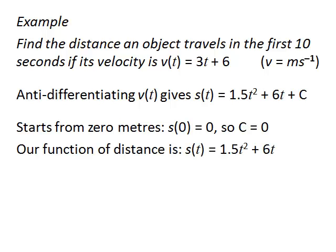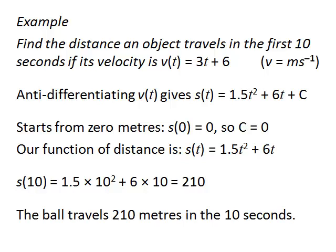So we have our function of distance. s(t) is 1.5t squared plus 6t. And we are asked how far it travels in the first 10 seconds. So into our function of distance we stick our time. And 1.5 times 10 squared plus 6 times 10 is 210. The ball travels 210 metres in the 10 seconds.